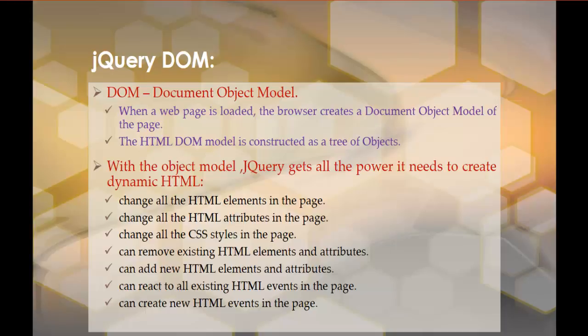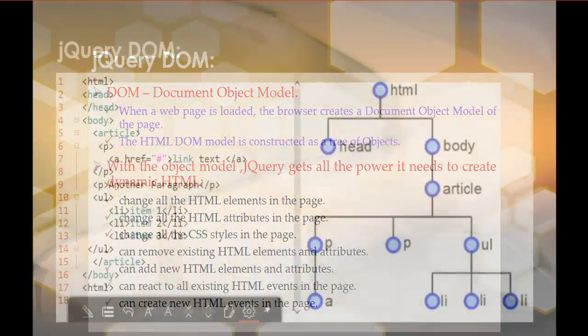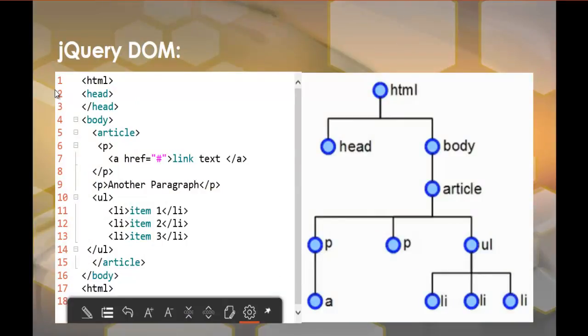Let us examine a very simple HTML page to understand what DOM is. Within a browser, the document is represented by a tree. I am having a piece of HTML here. Within the HTML I have a head tag and a body tag. Within the body tag I have an article section, and within the article section I have three elements: two paragraphs and one unordered list. The unordered list consists of three list items.